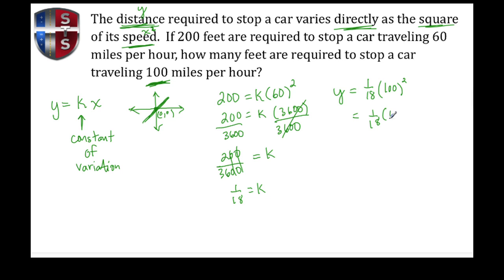Well 100 times 100, we just write the 1 and we know we need four zeros. Then we just begin to solve. We have 10,000 divided by 18, or we can divide everything by 2. Half of 10,000 is 5,000 and then 18 divided by 2 is 9. So 555 and 6 tenths, and that there tells us how many feet are required to stop that vehicle which is traveling at 100 miles per hour.